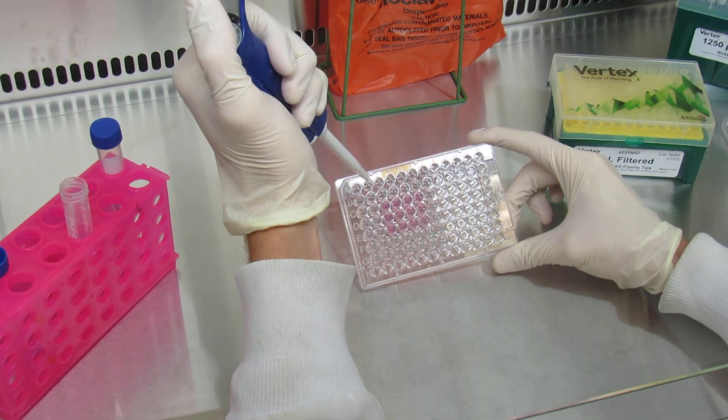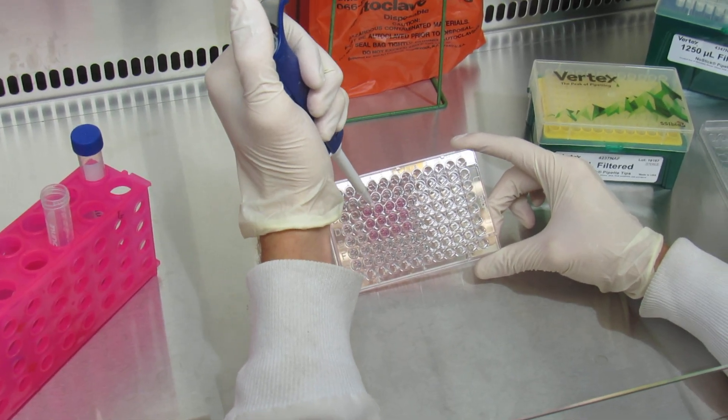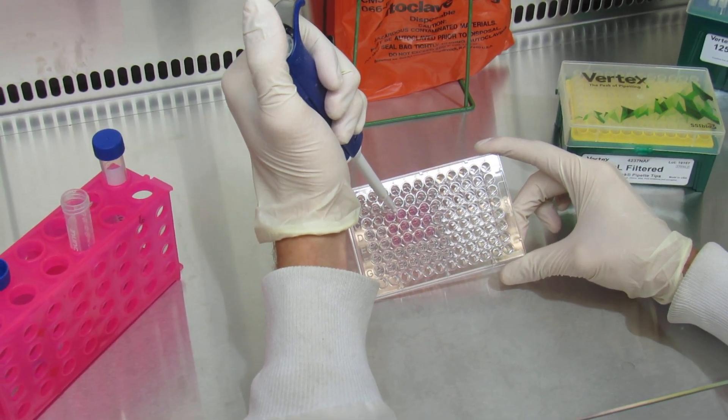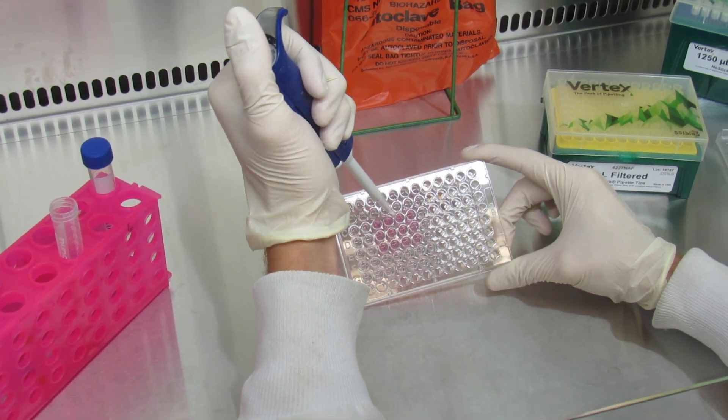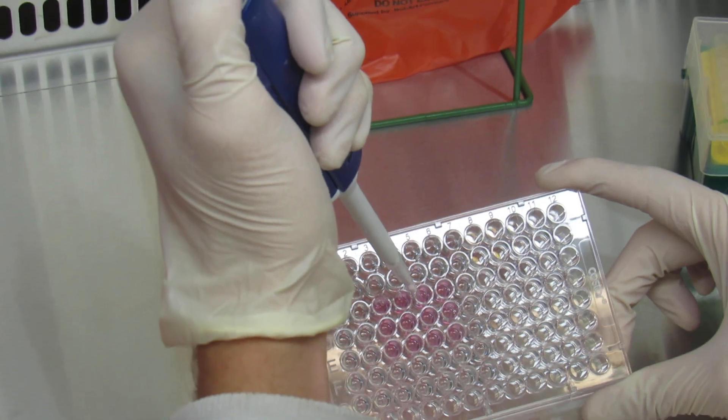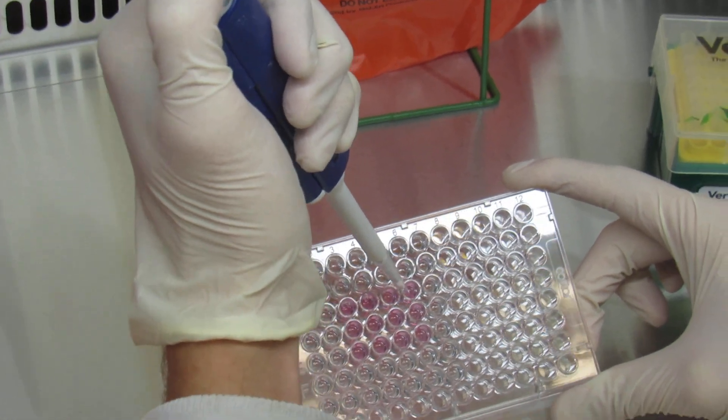Now you'll take 10 microliters out of that well and you'll put it into the adjacent well to the right side. You'll pipette up and down about five times. Do the exact same thing for the next one, and then the last one.